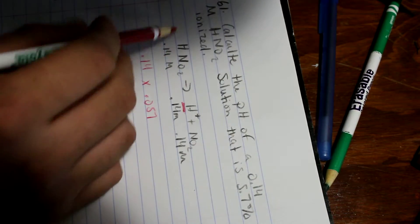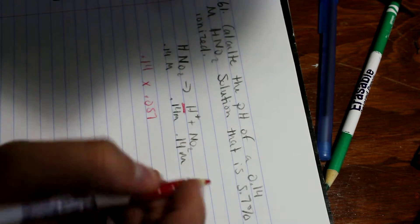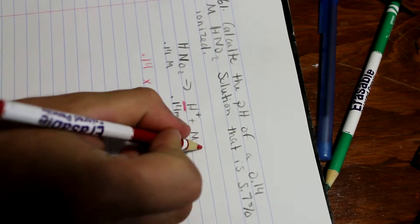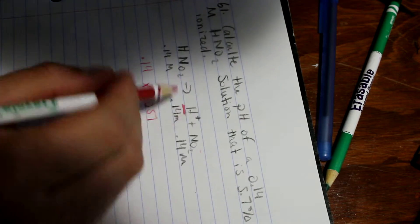So we dissociate HNO2, which turns to H+ plus NO2-. We know that we start with 0.14 molar concentration.